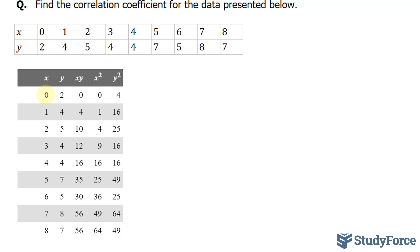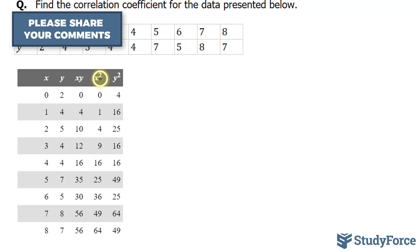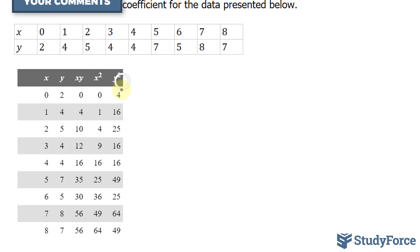I've also multiplied 0 and 2 to get 0, powered 0 by 2 and got 0, powered 2 to the power of 2 and got 4. Similarly, 1 times 4 is 4, 1 to the power of 2 is 1, 4 to the power of 2 is 16.